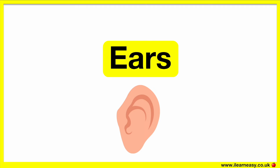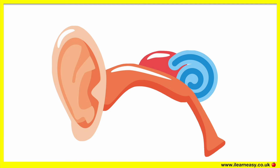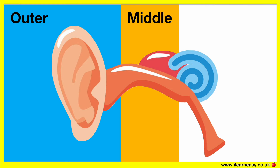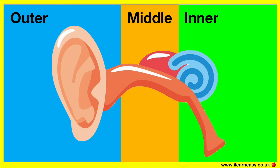Our ears help us to hear things. The auditory system is the ears and the brain. The ears convert sound energy into neural signals which are received by the brain. This signal travels through the outer ear, the middle ear and the inner ear. In order for us to hear a sound, the sound must travel all the way from our ear to the brain.